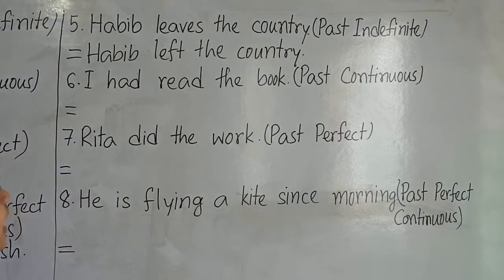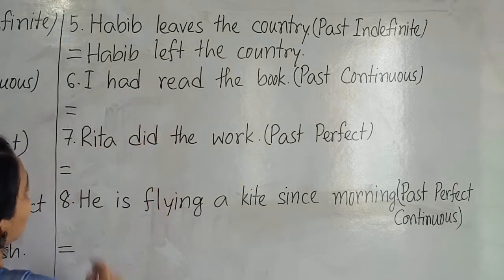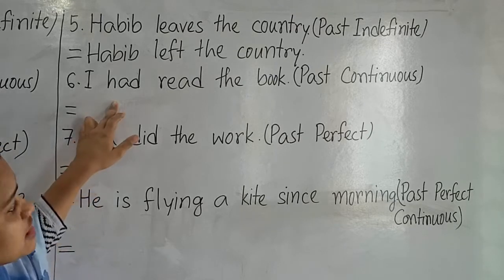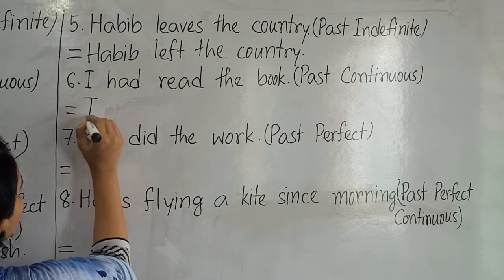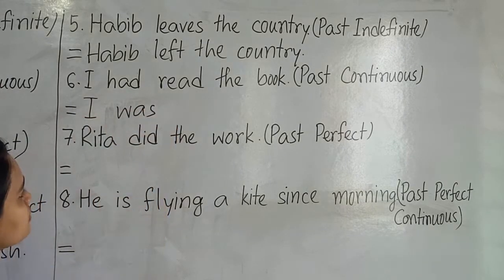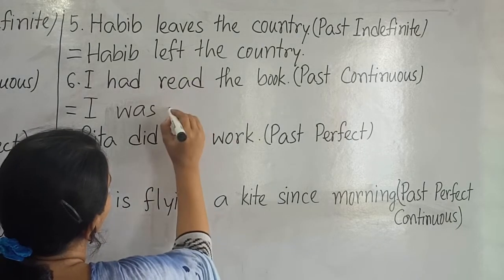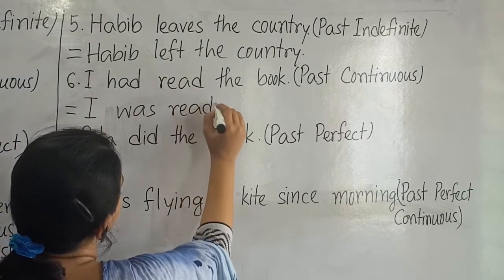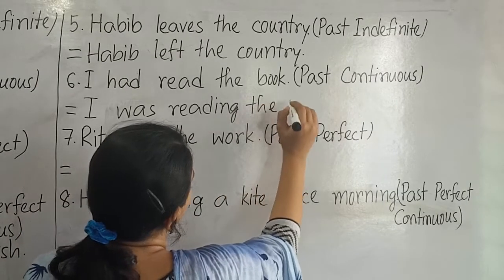Number six: 'I have read the book.' We will change it to past continuous tense. We use 'have' in the present perfect tense and now we will change it to past continuous. We write 'I' and after 'I' we write 'was' — according to the structure we use 'was' in past continuous tense after a singular subject. Then the verb with '-ing': r-e-a-d-i-n-g, reading. So: 'I was reading the book.'